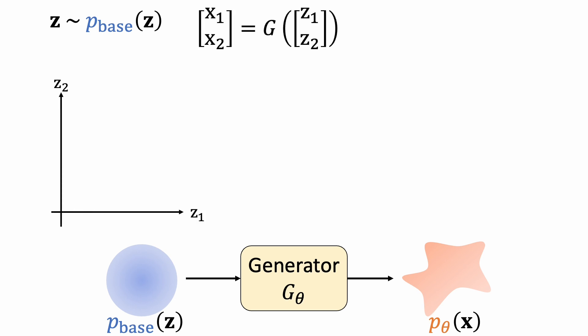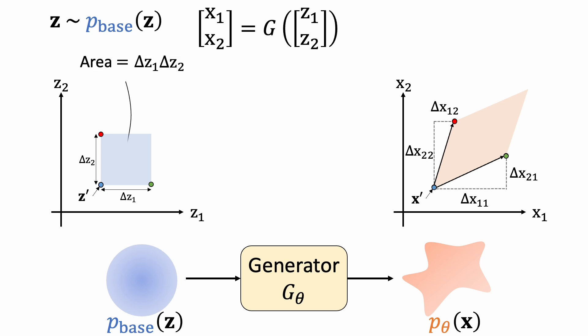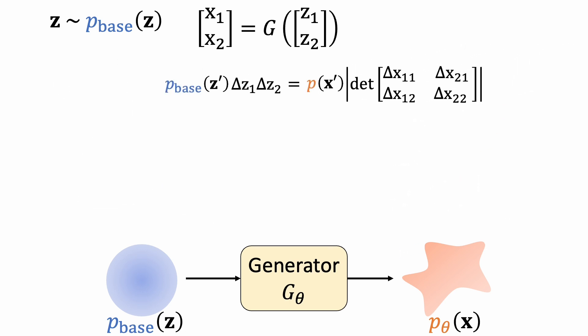Now let's check the two-dimensional case. We look at the specific location z-prime and its local neighborhood. This vector specifies the change in x1 and x2 directions caused by delta z1. And this vector specifies the change caused by delta z2. Here we compute an area spanned by the two vectors using determinant. We can now write down the relation that the probabilities in these areas must stay the same.